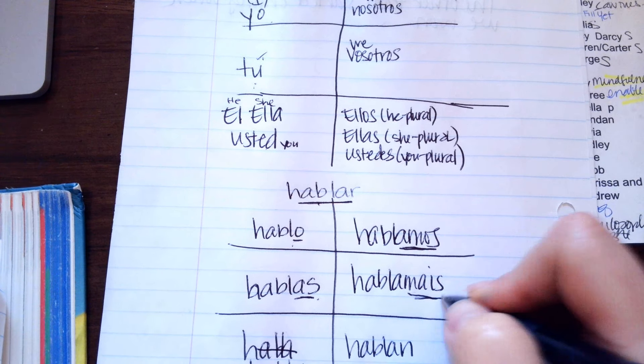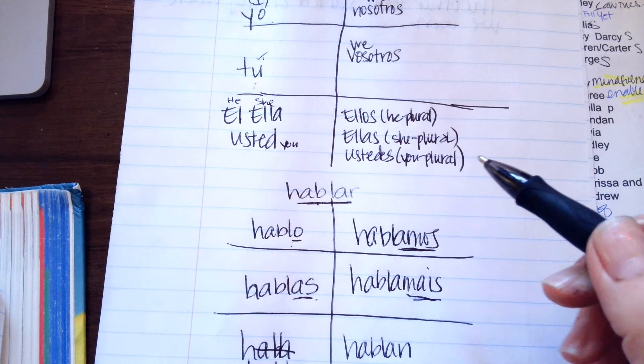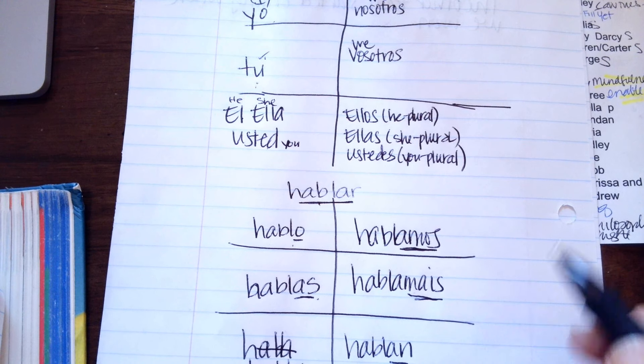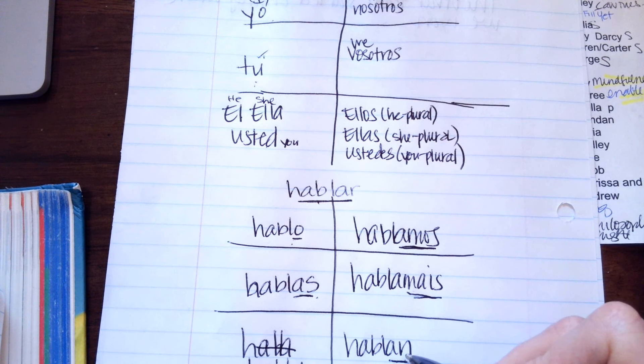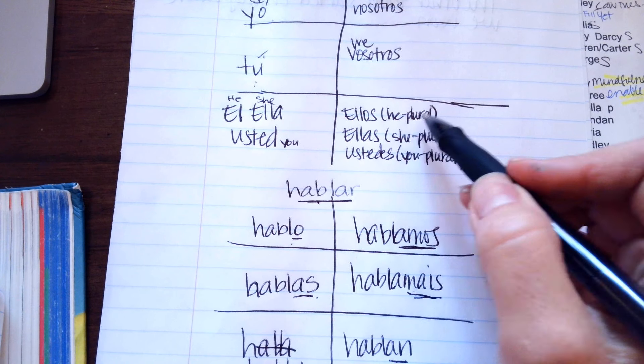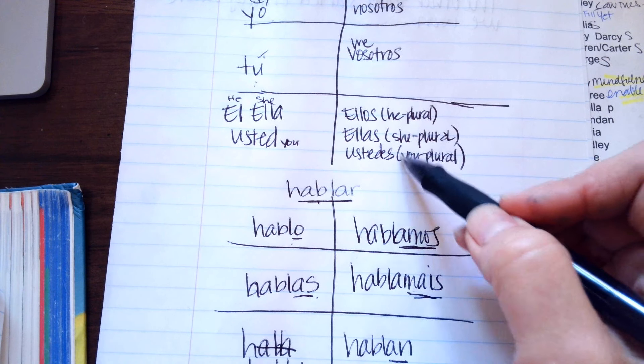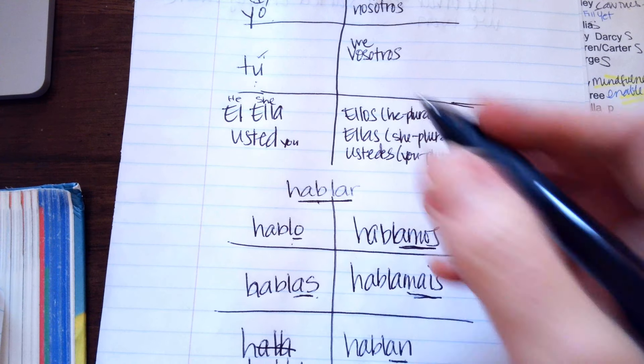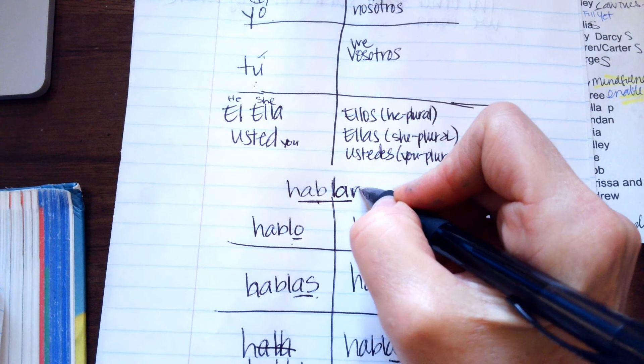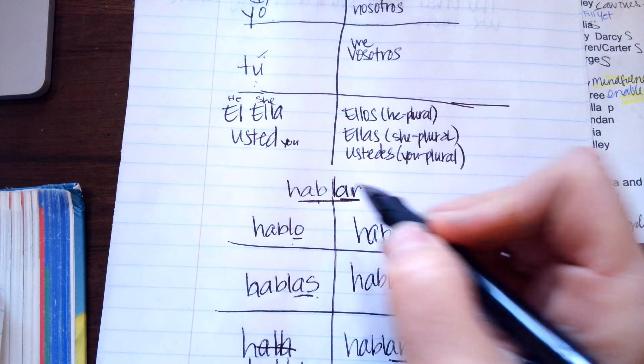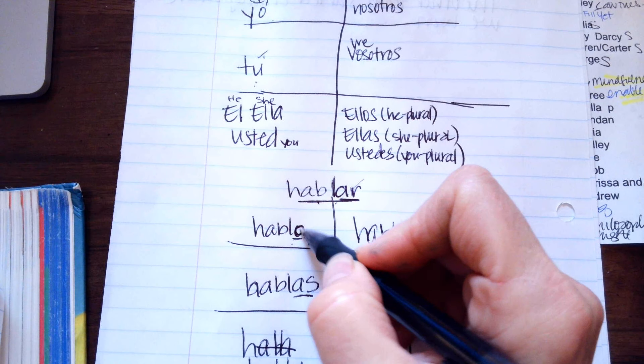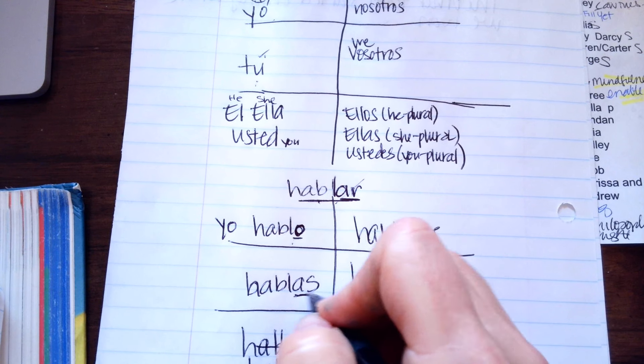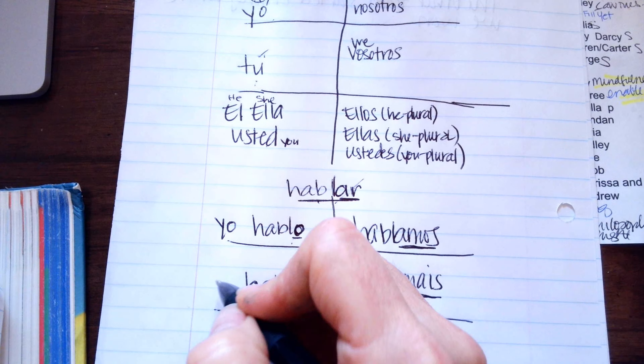And then this one is the vosotros. I don't think you're going to learn it. And it's not used very often. And then this one is either they speak like a group of boys, a group of girls, or you speak. So, does that make sense? When you have a verb that ends in AR, you take off the AR and you put an O if you're talking about yo.